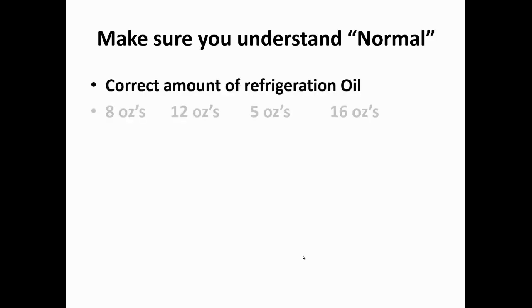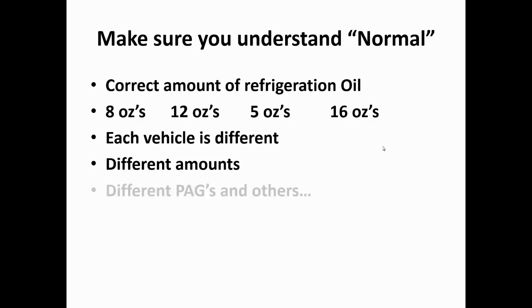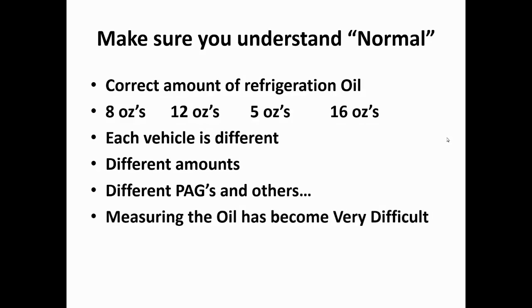Understanding normal: the correct amount of oil varies — all systems are different. Some use a very small amount, some use a whole bunch. The difference is the size of the refrigeration system. This particular one is probably on a dual unit on a van or SUV with an evaporator in the front and one in the back. We'll show you how to find that information. They also have different kinds of oil.